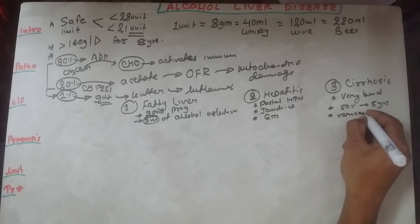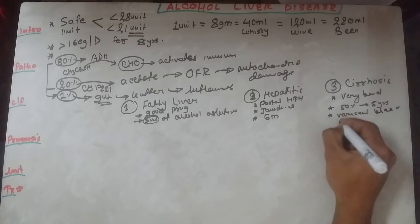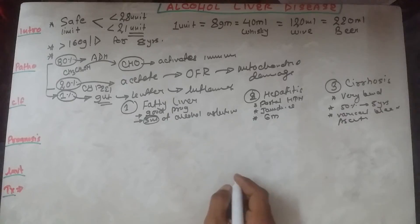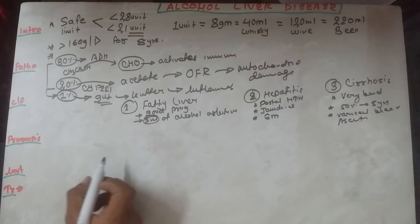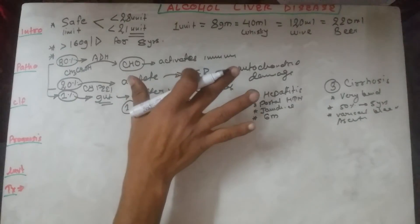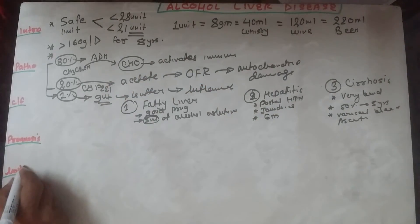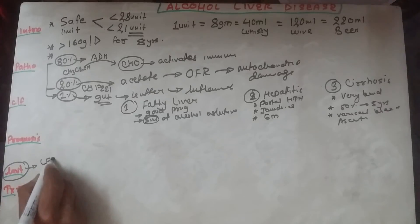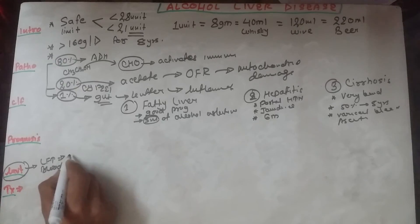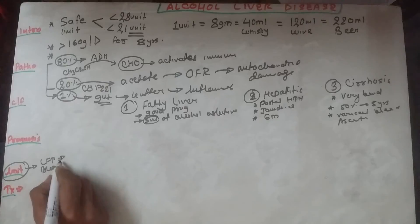Now coming to the investigation of alcoholic liver disease, it is exactly similar to cirrhosis of the liver. For investigation, we can send liver function tests, blood examination, and imaging. Under LFT we will look for bilirubin, prothrombin time, AST, ALT ratio, ALP enzyme, and other proteins and albumin levels in the blood.